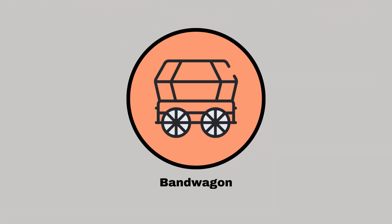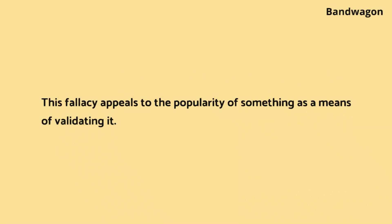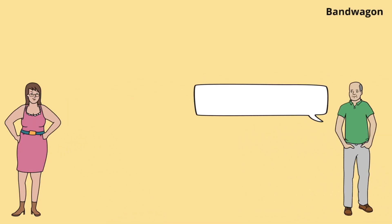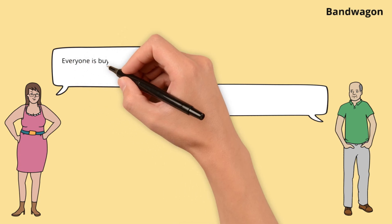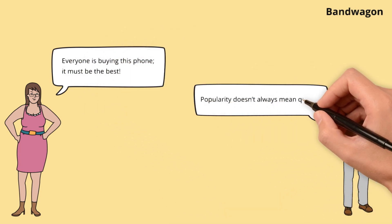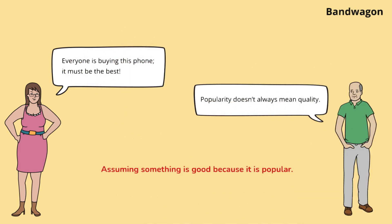Bandwagon. This fallacy appeals to the popularity of something as a means of validating it. Mia argues that a product must be good because it's popular. Ethan highlights that popularity isn't a reliable indicator of quality, urging a more critical evaluation.